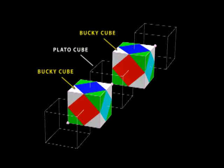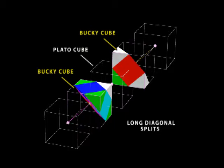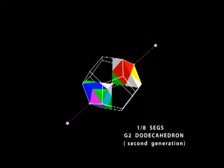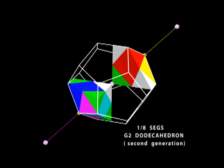Now look what you can do. The two Bucky cubes will split just like I showed in my last video. And they'll form the segments of a second generation of dodecahedron. It seems to be a perfect match.